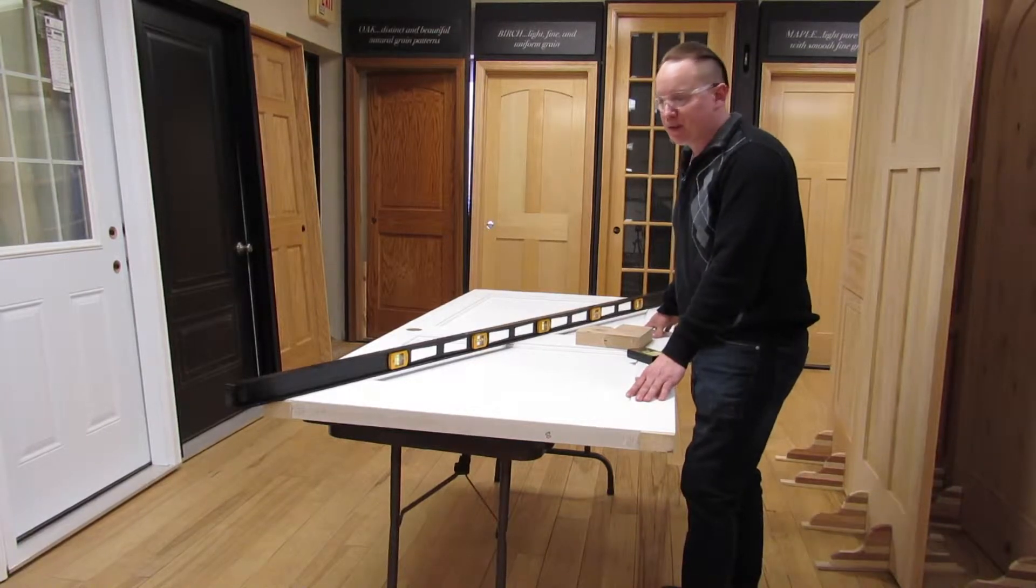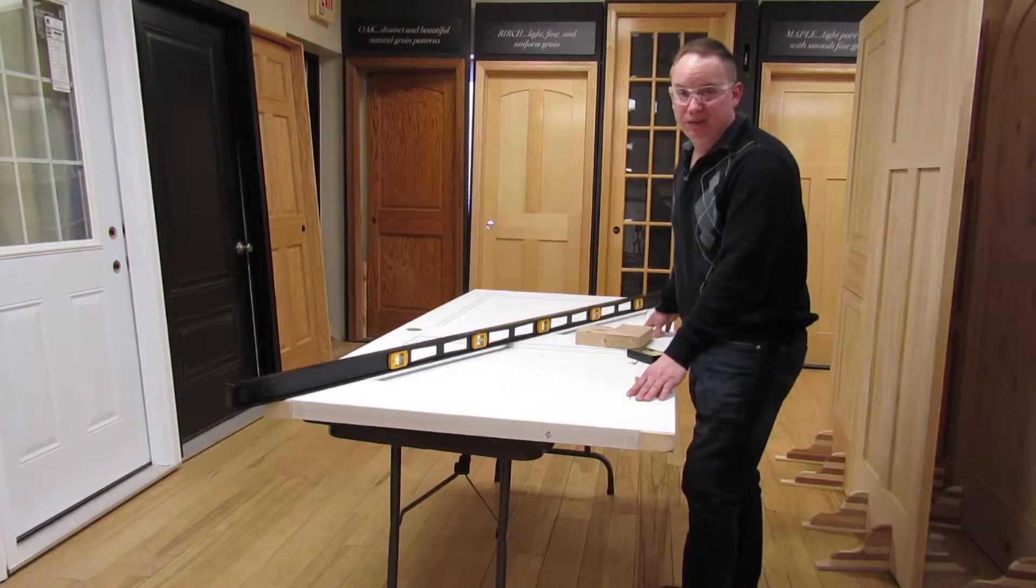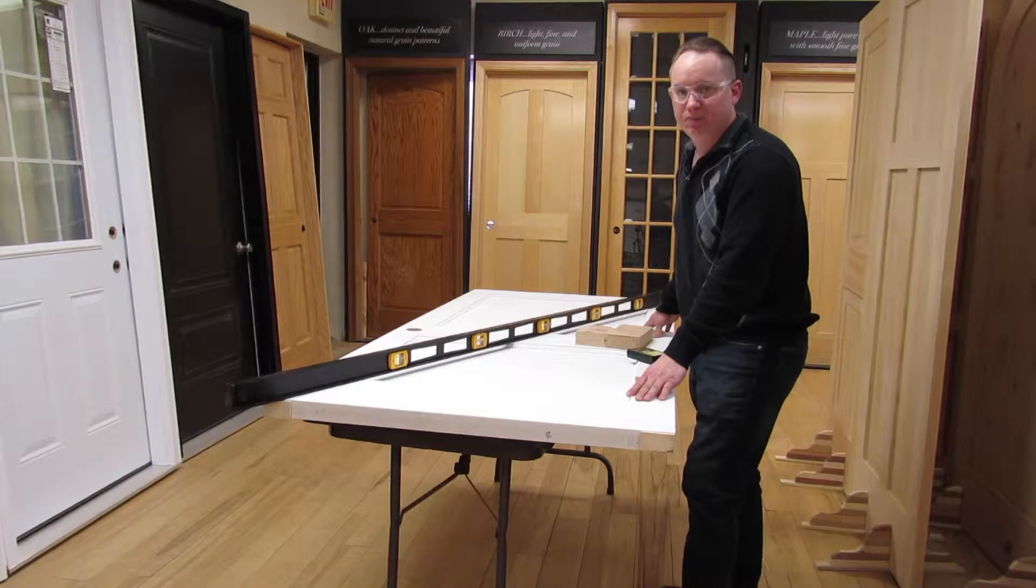What warp is? Warp happens to any wood product that dries out. It starts to bend and twist and bow.